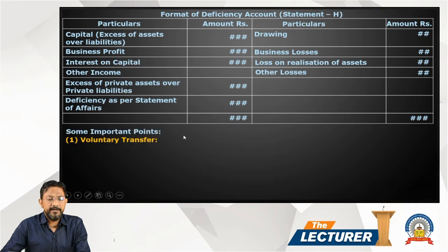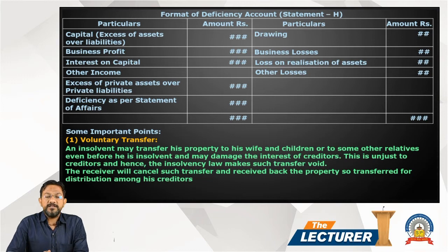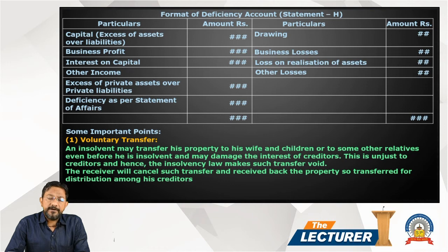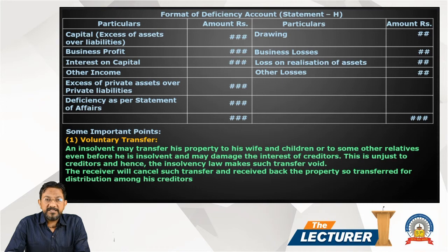Some important points — Voluntary Transfer: An insolvent may transfer his property to his wife, children, or other relatives even before he is declared insolvent, which may damage the interest of the creditors. This is unjust to the creditors. The receiver — the person appointed by the court — will cancel such transfers and recover the property for distribution among the creditors.